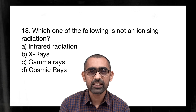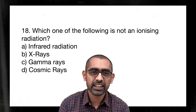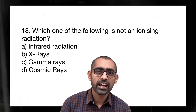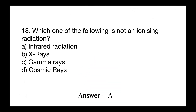Question number 18 is from general science. Ionizing radiations are those that, when they strike something, tend to remove electrons due to high energy. The answer for what is not an ionizing radiation is infrared radiation. If you know the radiation spectrum it should be easy to solve. Study optics and electromagnetic radiation in detail from your NCERT, as science questions frequently touch upon these aspects.